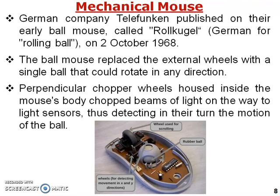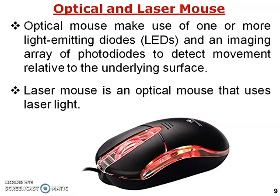Mechanical mouse: a German company Telefunken published an early ball mouse called the Rollkugel — German for 'rolling ball' — on the second of October 1968. The ball mouse replaced the external wheel with a single ball that could rotate in any direction. Inside the mouse's body, perpendicular chopper wheels and light sensors together detect the motion and determine the direction of the cursor.